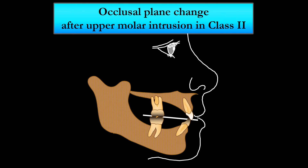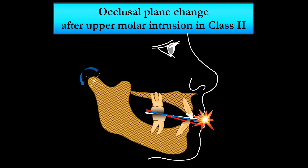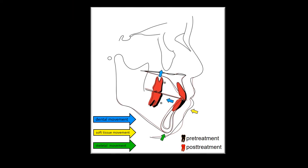If we intrude upper molars, it will steepen the upper occlusal plane. After autorotation of the mandible, if the lower incisors are proclined, they can induce premature contact. How can we prevent this? This is her lateral cephalometric superimposition. To prevent this side effect, the proclined lower anterior dentition was retroclined and distalized before mandibular rotation.